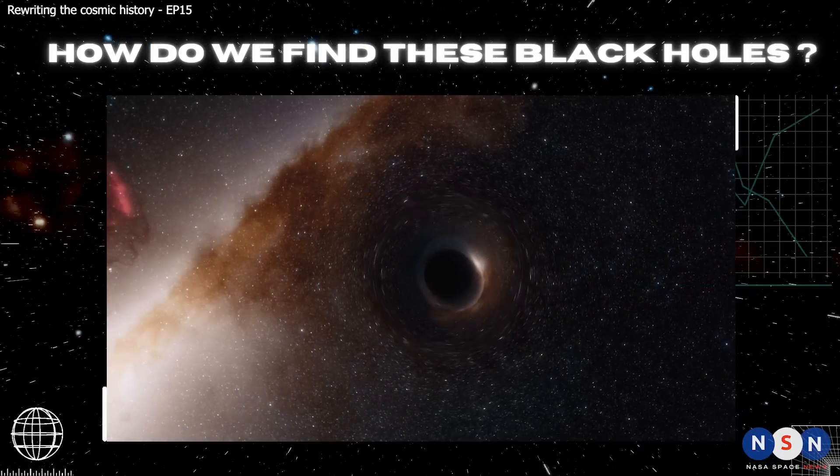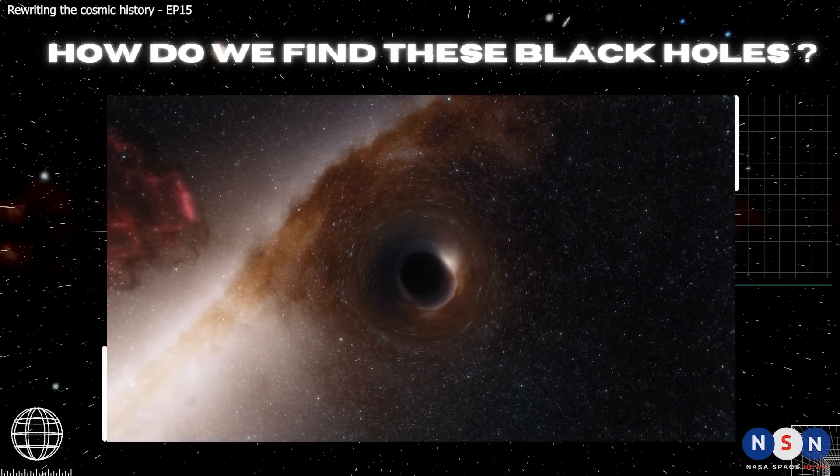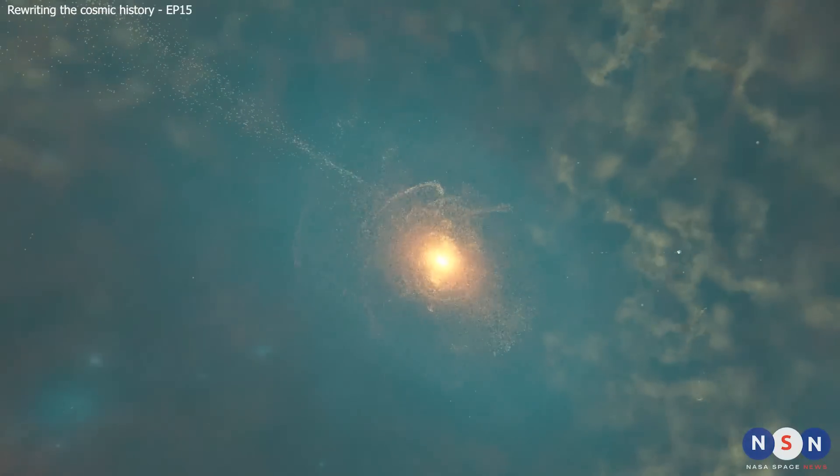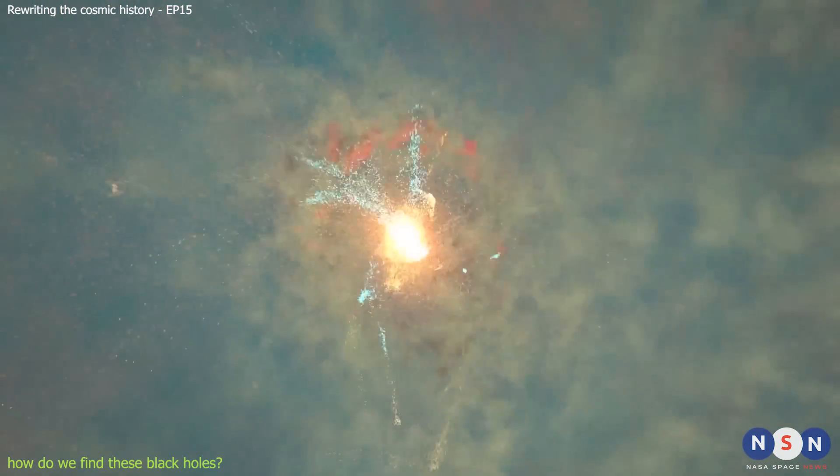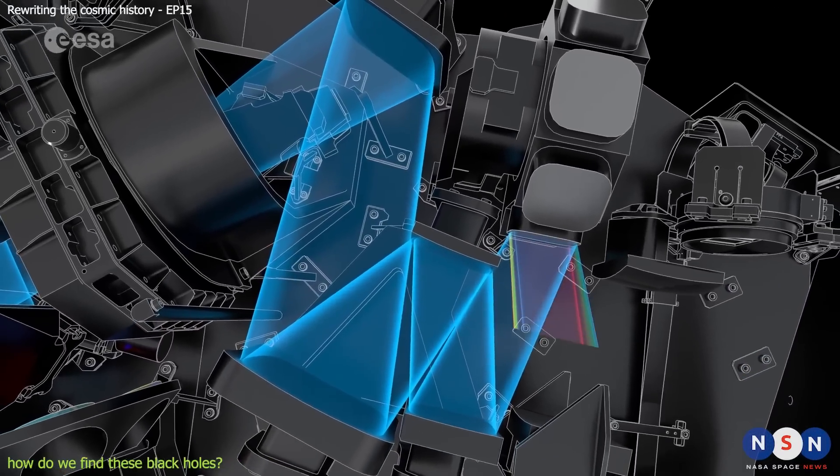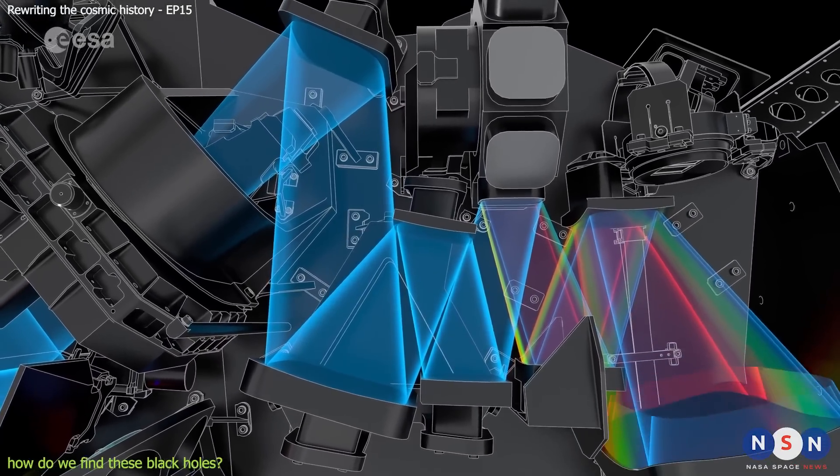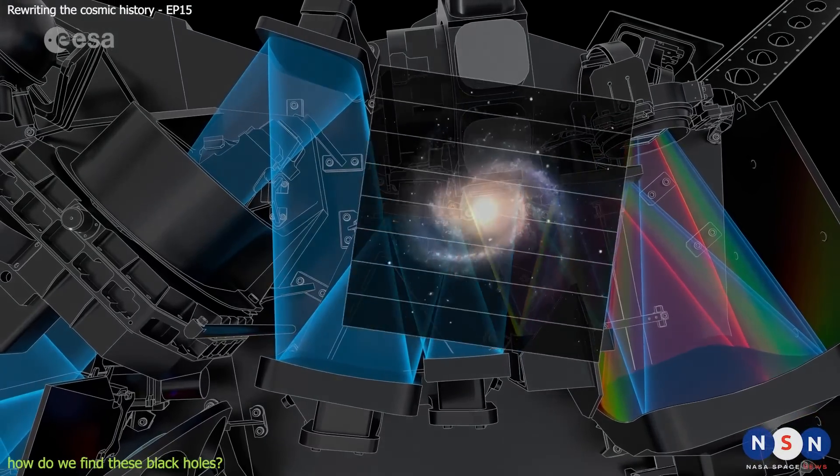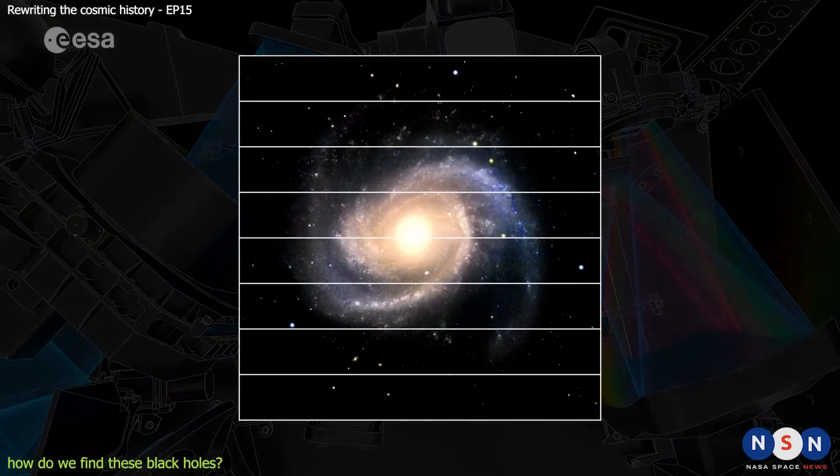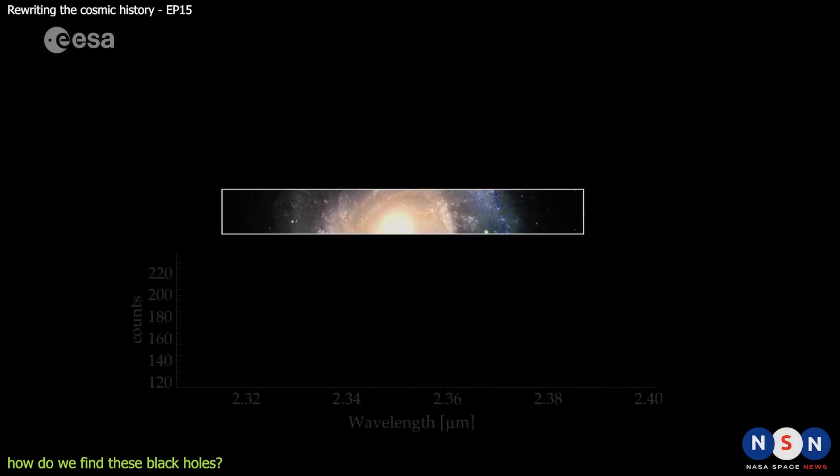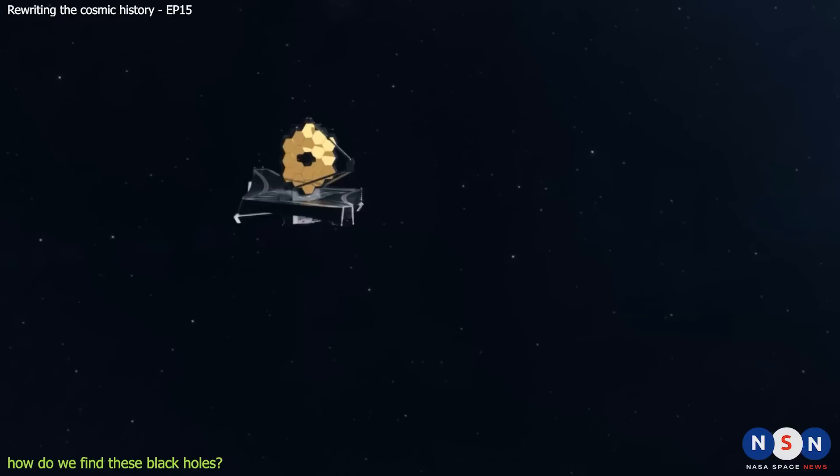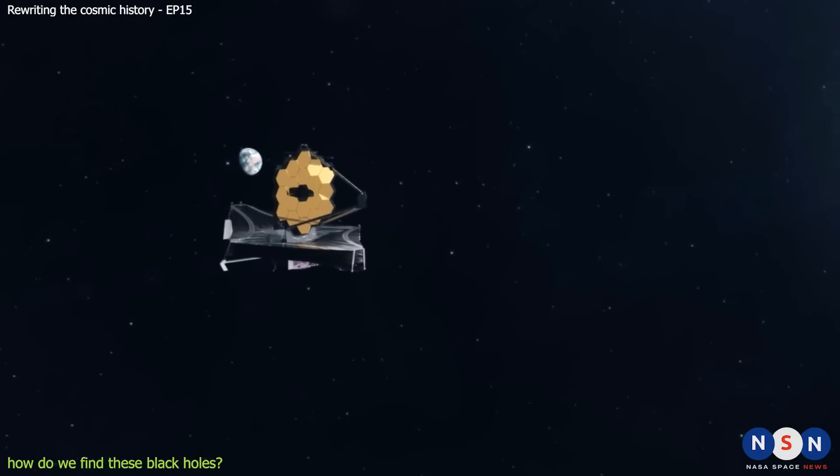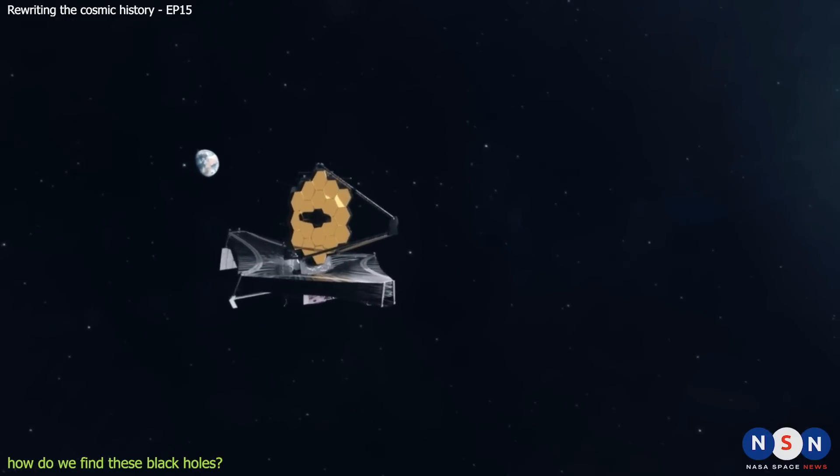Another question that you might have is, how do we find these black holes in the first place? How do we know that they are there? Well, finding these black holes is not easy. They are very far away, and their light is very faint and red-shifted by the expansion of the universe. That means that we need very powerful and sensitive telescopes to detect them, especially in the infrared part of the spectrum, which is where most of their light is emitted. That's why James Webb is so important for this research. It has a large mirror that can collect a lot of light, and a suite of instruments that can observe in different wavelengths of infrared light. It also orbits far away from the Earth, where it can avoid the interference and noise from our atmosphere and other sources.